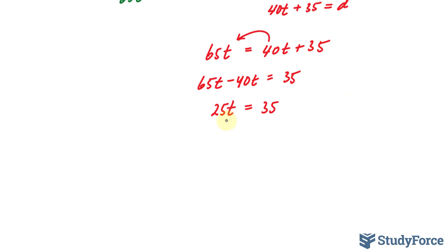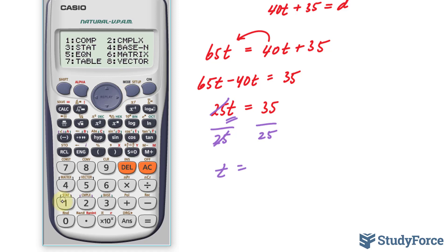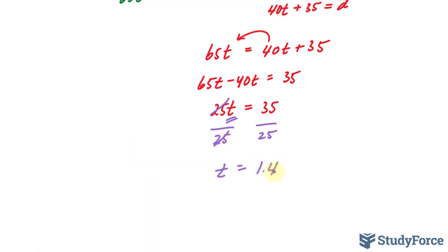And now, to isolate for this T, I'll divide both sides by 25, giving me T is equal to, using my calculator, 35 divided by 25. The fraction is 7 over 5, although we rarely represent time as fractions, so 1.4 will suffice. 1.4 hours.